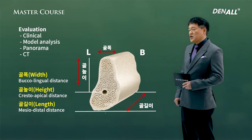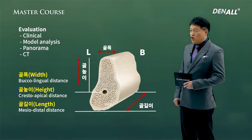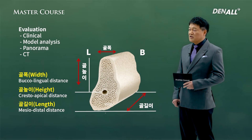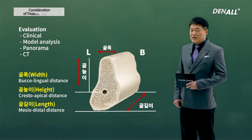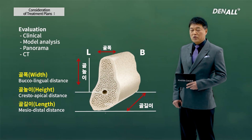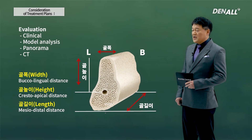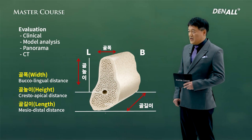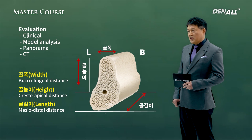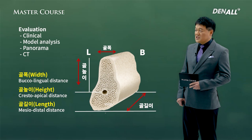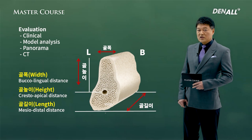The assessment can be done clinically, on the model, with a panoramic image, or CT. All three factors need to be sufficiently addressed, and we have to choose what implant, what thickness, and what length we are going to use. We have to decide whether it will be one-stage or two-stage surgery, whether GBR is necessary. These preparations need to be done using CT or panoramic image, with sufficient review and diagnosis.